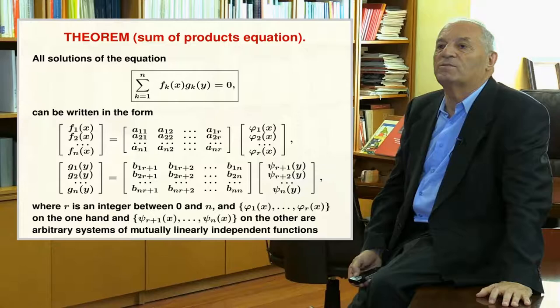This theorem explains in detail how the general solution of the functional equation works. First, we write the sets f and g functions in the form of column matrices. Next, we build two column matrices — phi 1 to phi r, and phi r plus 1 to phi n — that form the basis of two linear spaces to which the f and g functions belong. Connecting these matrices by matrix products, we have two intermediate matrices with elements a and b respectively. The main problem is the selection of the basic matrices, including the phi functions, which must total n functions. We must decide how to distribute the n functions between the f and g matrices.